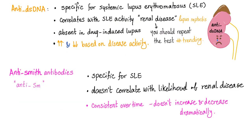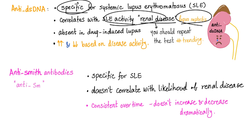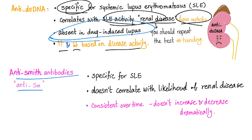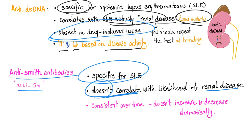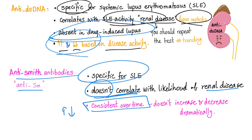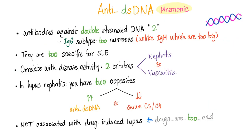Anti-double-stranded DNA is specific for lupus and correlates with disease activity — meaning renal disease, lupus nephritis, and vasculitis. Levels increase and decrease based on disease activity, but they are absent in drug-induced lupus. Anti-Smith antibodies are specific for lupus but do not correlate with the likelihood of renal disease or disease severity. They are consistent over time and don't go up and down like anti-double-stranded DNA.